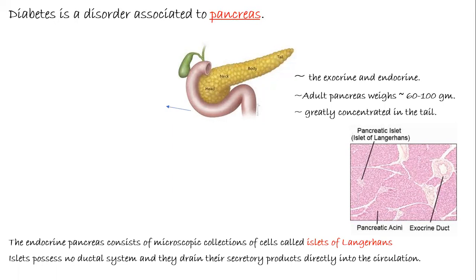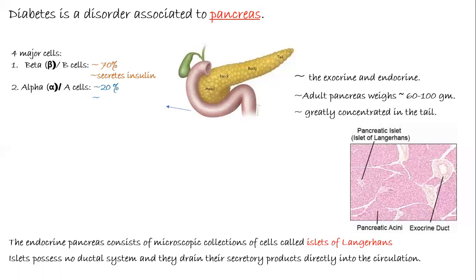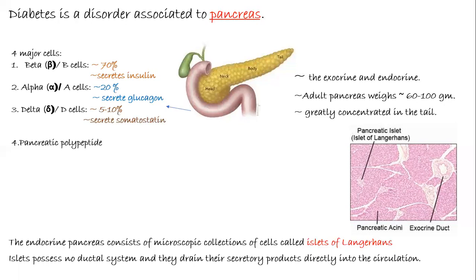The pancreas majorly contains two types of cells: major and minor. There are four major types. Beta cells comprise about 70% of islet cells and are responsible for secretion of insulin. A defect in the beta cells causes diabetes mellitus. The alpha cell comprises about 20% of the islet cells and is responsible for secretion of glucagon, which induces hyperglycemia.